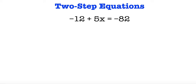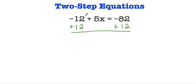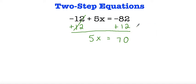Now in my next problem, I have negative 12 plus 5x is equal to negative 82. Remember we want to isolate our x, so I'm going to leave the 5x alone. In order to get rid of this negative 12, I have to add 12, and whatever I do on one side, I have to do on the other side. Negative 12 plus 12 cancels out, and I'm left with 5x is equal to. Now I have negative 82 and a positive 12. Since the signs are opposite, we're going to subtract: 2 minus 2 is 0, 8 minus 1 is 7. We keep the sign of the number with the greatest absolute value, which is negative 82, so this is going to be negative 70.